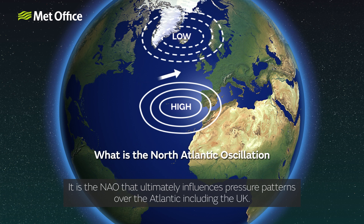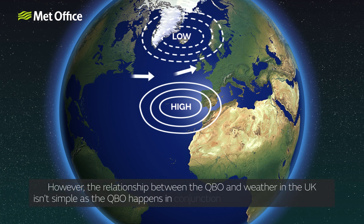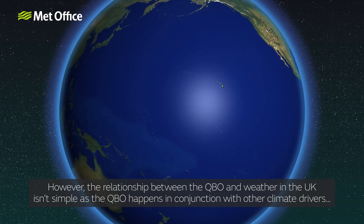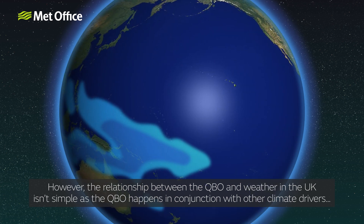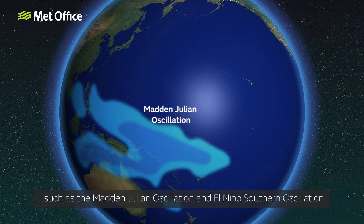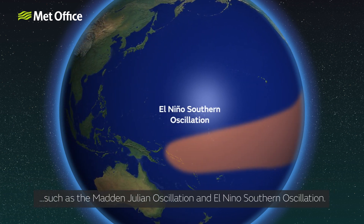It's the NAO that ultimately influences pressure patterns over the Atlantic, including the UK. However, the relationship between the QBO and weather in the UK isn't simple, as the QBO happens in conjunction with other climate drivers, such as the Madden-Julian Oscillation and El Niño-Southern Oscillation.